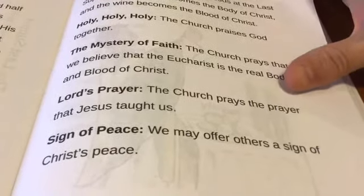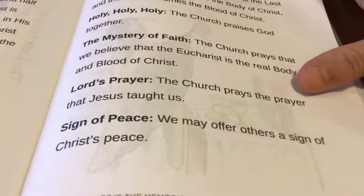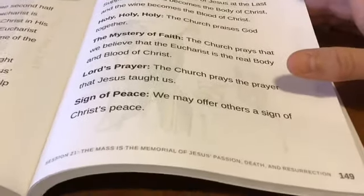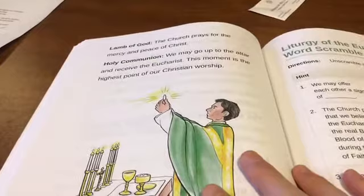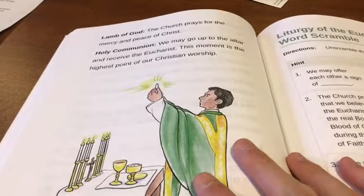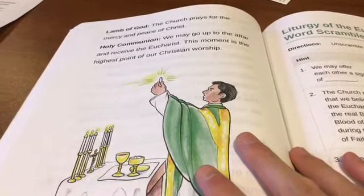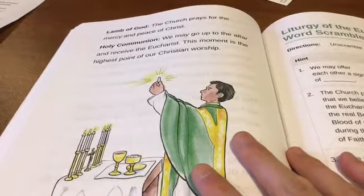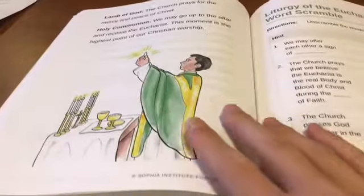We have the Lord's Prayer — the church prays the prayer that Jesus taught us, the Our Father. We have a sign of peace, and we may offer others a sign of Christ's peace. The Lamb of God — the church prays for the mercy and peace of Christ — and then we receive Holy Communion. We may go up to the altar and receive the Eucharist. This moment is the highest point of our Christian worship.